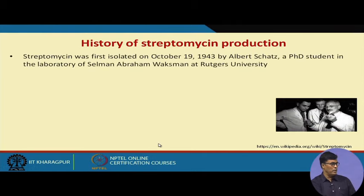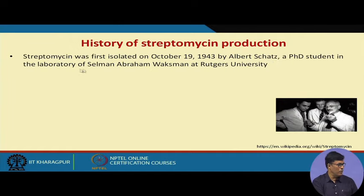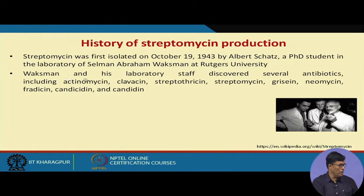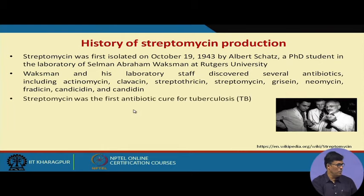Looking at the history of streptomycin, it was first isolated on October 19, 1943, by Albert Schatz, a PhD student in the laboratory of Selman Abraham Waksman at Rutgers University, USA. Waksman and his laboratory staff discovered several antibiotics including actinomycin, neomycin, and streptomycin, among others.